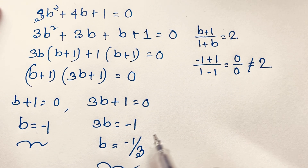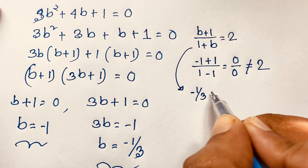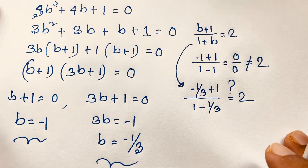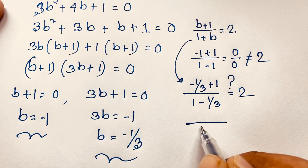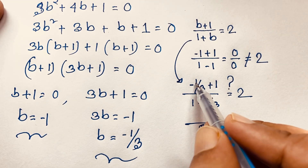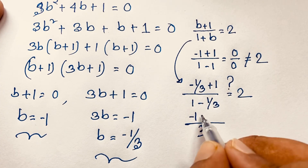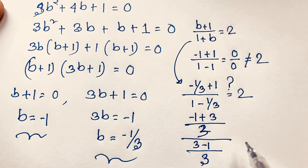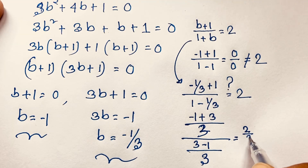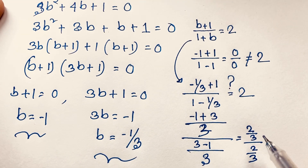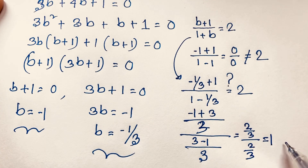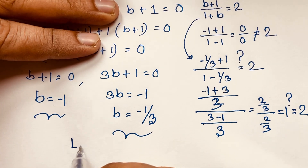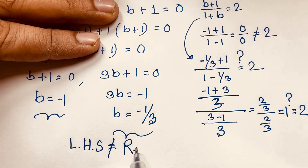Now let's try b = −1/3. Substituting: (−1/3 + 1)/(1 − 1/3) = 2. Finding the common denominator of 3: the numerator becomes (−1 + 3)/3 = 2/3, and the denominator becomes (3 − 1)/3 = 2/3. So we get 1 = 1, but 1 does not equal 2. So left-hand side and right-hand side are not equal in both solutions.